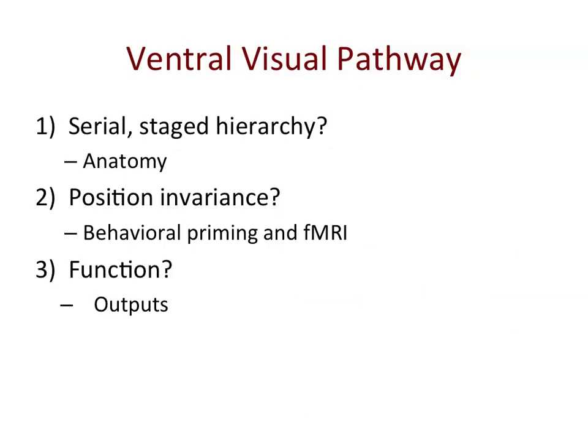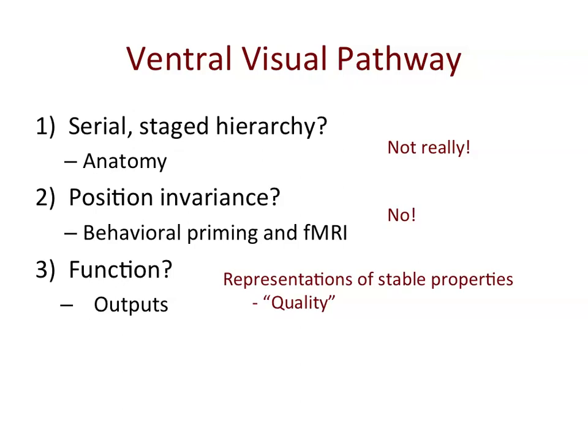So overall, what I hope I've shown is that although it's convenient to think of the ventral visual pathway as a serial stage hierarchy, that's not really what it is, and we need to understand what this recurrence is really doing. It doesn't really produce position invariant representations. And in terms of function, we should think of it as being there to support the representation of the stable properties — the quality of things that are in the world. Thank you for listening.